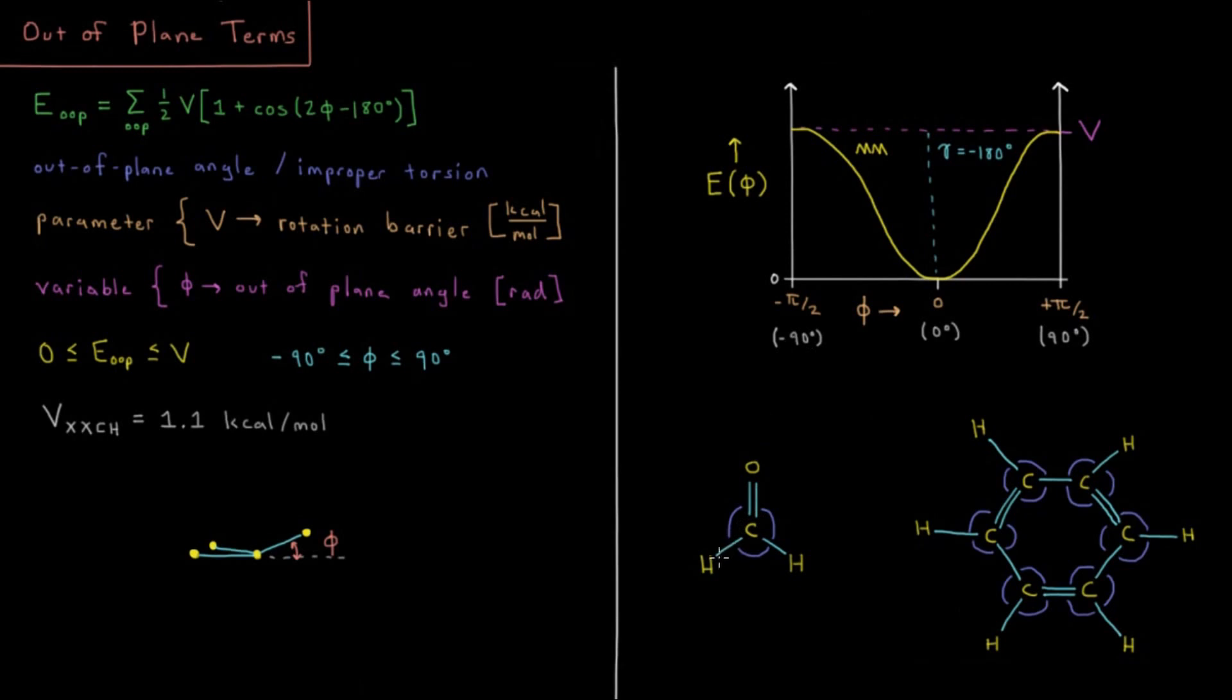Examples where this might be relevant are molecules like formaldehyde, where we want this sp2 carbon to have a planar geometry. This oxygen here should be in the plane of these two hydrogens and the carbon. Deviation away from that should be penalized with some increase in potential energy. Or something like benzene, where we have six aromatic carbons, six sp2 carbons, where this should stay in a planar arrangement. So we'd have six out-of-plane angles in benzene.